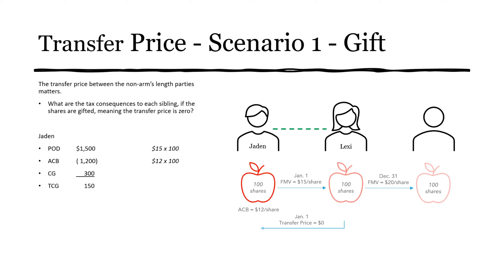Lexi will have proceeds of disposition in December of $2,000 (100 shares × $20). Her adjusted cost base is $1,500 — because the shares were gifted to her, her ACB is deemed to be the fair market value at the time ($15 × 100 shares). This results in a capital gain of $500 and a taxable capital gain of $250.